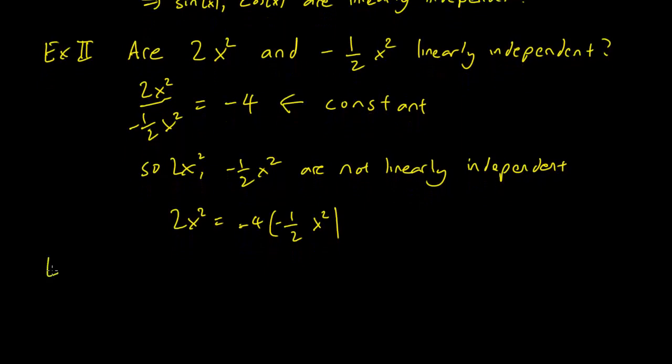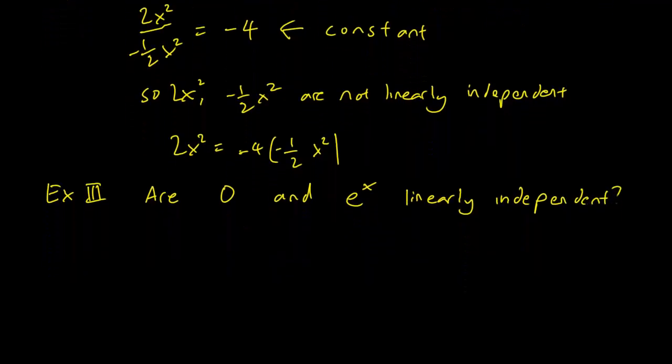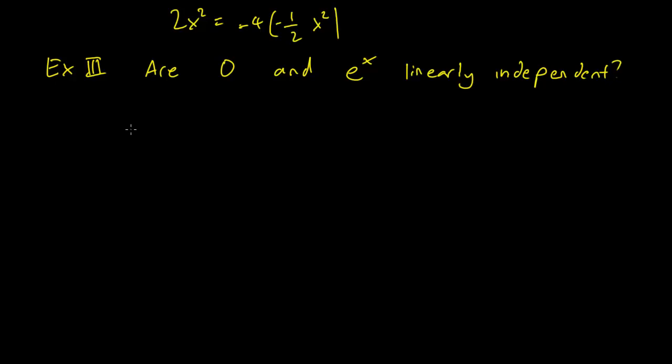I'm going to show you one more example. This is slightly tricky. And the answer to this question is actually no because zero is equal to zero times e^x. So 0 is a constant multiple of e^x.